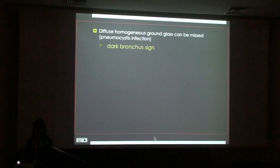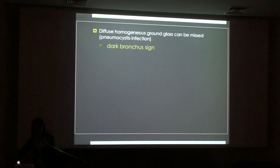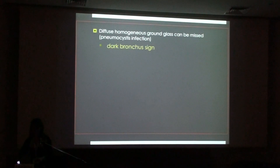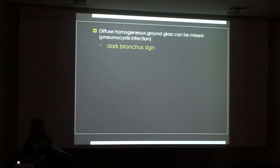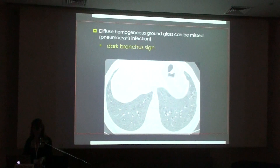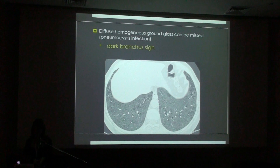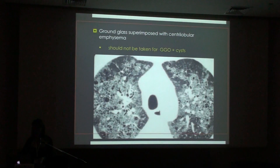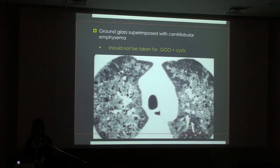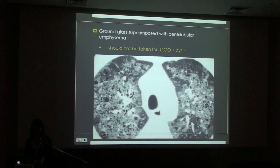Some pitfalls to end: it can be very difficult to detect ground glass when it is very homogeneous and very subtle. In that case, we should use the dark bronchus sign — the enhanced contrast between the air within the bronchi and the attenuation of the lung parenchyma. Another pitfall is when ground glass is superimposed with centrilobular emphysema, which should not be mistaken for the association of ground glass and cysts — the holes are emphysema, not cysts.